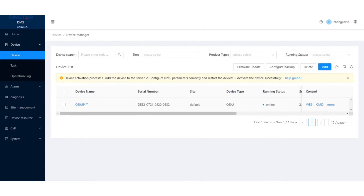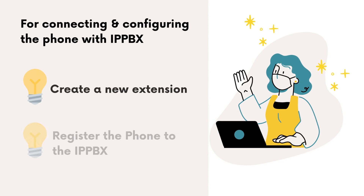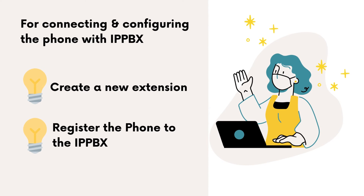Click web, and you can access the web interface of the 4G SIP phone when the network cable is removed. For connecting and configuring the RP phone with RPPBX, there are a few steps. The first step is creating a new extension. The second step is registering the RP phone to RPPBX.